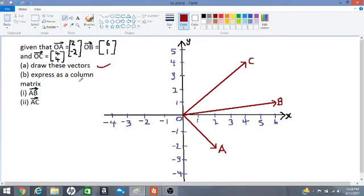Part B now, express as a column matrix AB and AC. So we have to remember that when we are doing vectors, think about a vector as a road. And we are walking down this road.